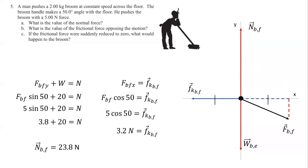Part C: if the frictional force were suddenly reduced to zero, what would happen to the broom? If the friction force drops off, you have an unbalanced force. Vertically it's balanced, but horizontally it's not. The x component of the push would be unbalanced, and so it would start to accelerate to the right.